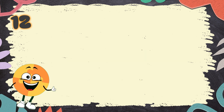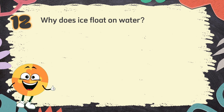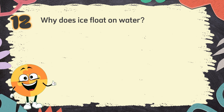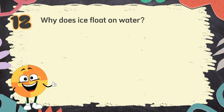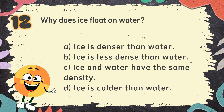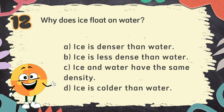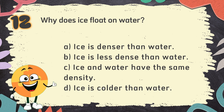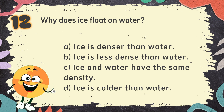Number 12. Why does ice float on water? The choices are: A. Ice is denser than water, B. Ice is less dense than water, C. Ice and water have the same density, D. Ice is colder than water.